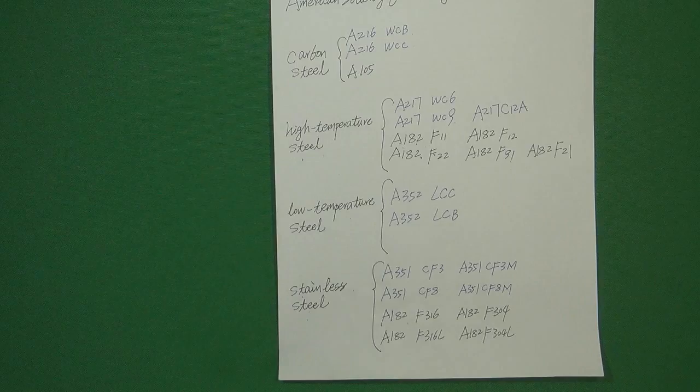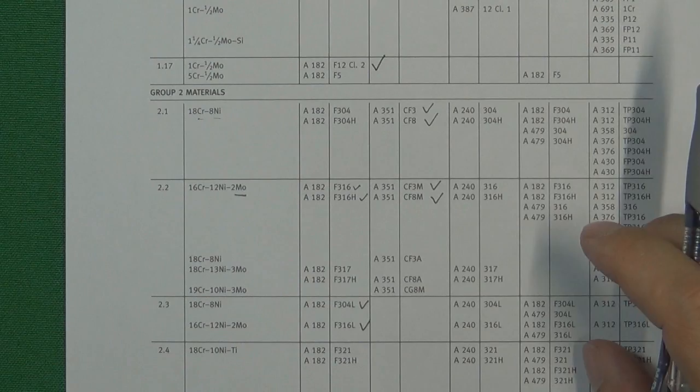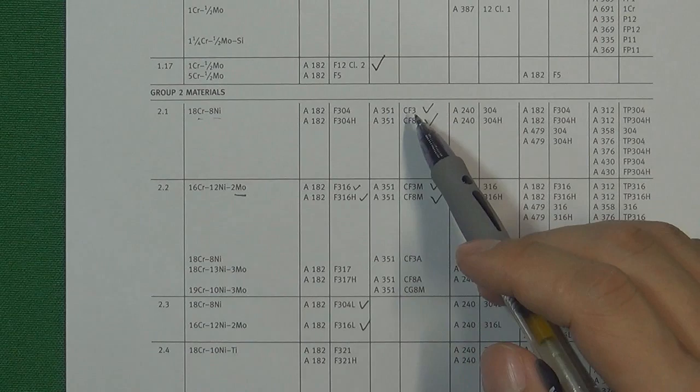Here is the standard ASME B16.34, the material list table. In this table you will find what kind of chemical elements are inside each material. In this list it already lists several different groups of stainless steel — for example, CF3 and CF8.